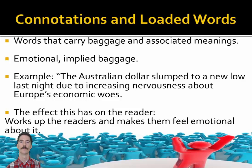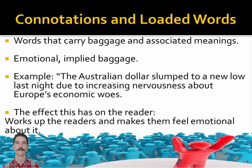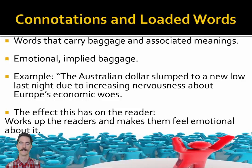Connotations and loaded words. These are words that carry baggage or have a wide web of associated meanings. In three words: emotional implied baggage. For example, 'The Australian dollar slumped to a new low last night due to increasing nervousness about Europe's economic woes' — woes, nervousness, slumped all bring pictures into your mind of the dire straits the Australian dollar is in. The effect is it works up the reader, makes them feel emotional, and can push boundaries — using words like 'Nazi' or 'Feminazi' to really rile people up with strong negative connotations.